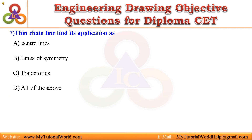Question 7: Thin chain line finds its application as — A. Center lines, B. Lines of symmetry, C. Trajectories, D. All of the above. Answer is All of the above.